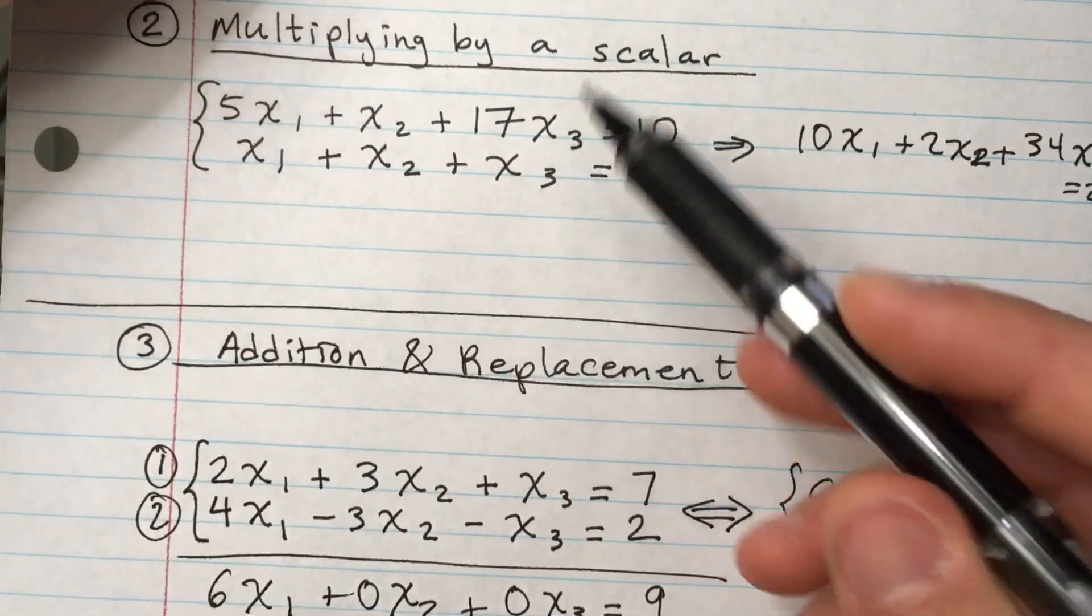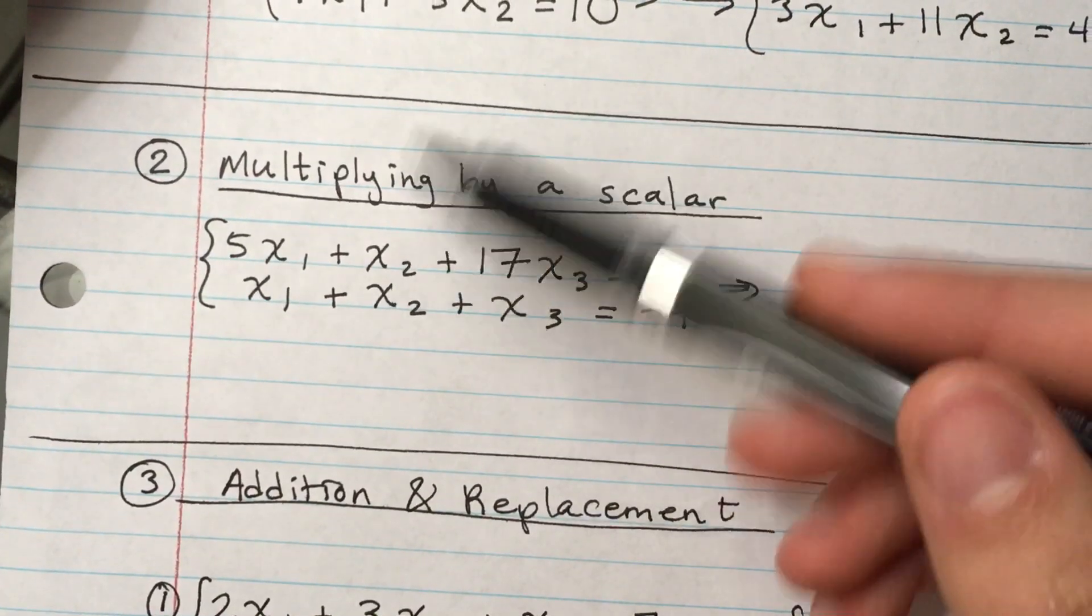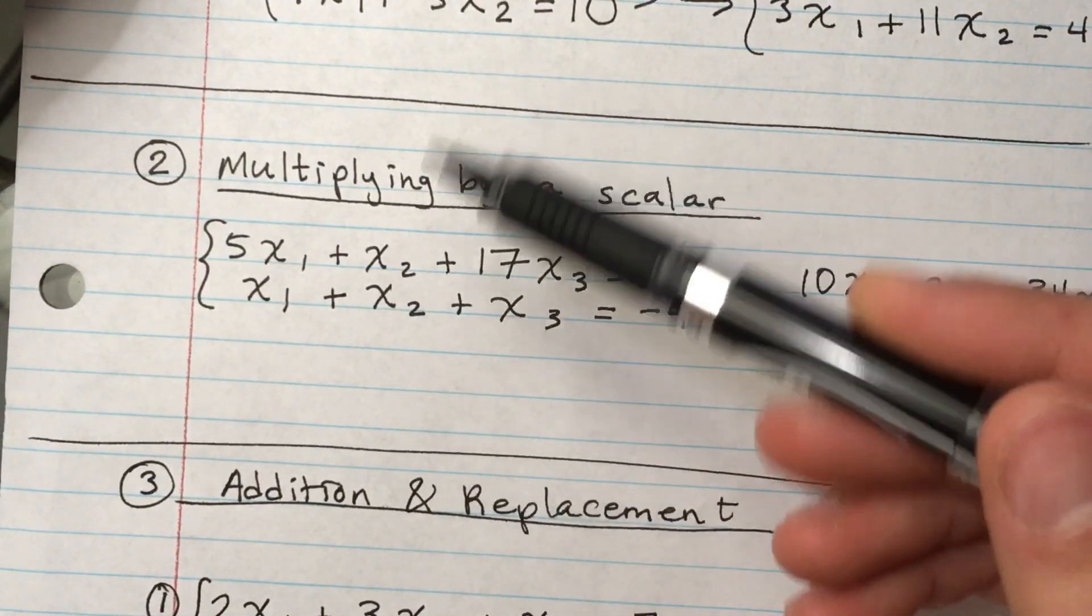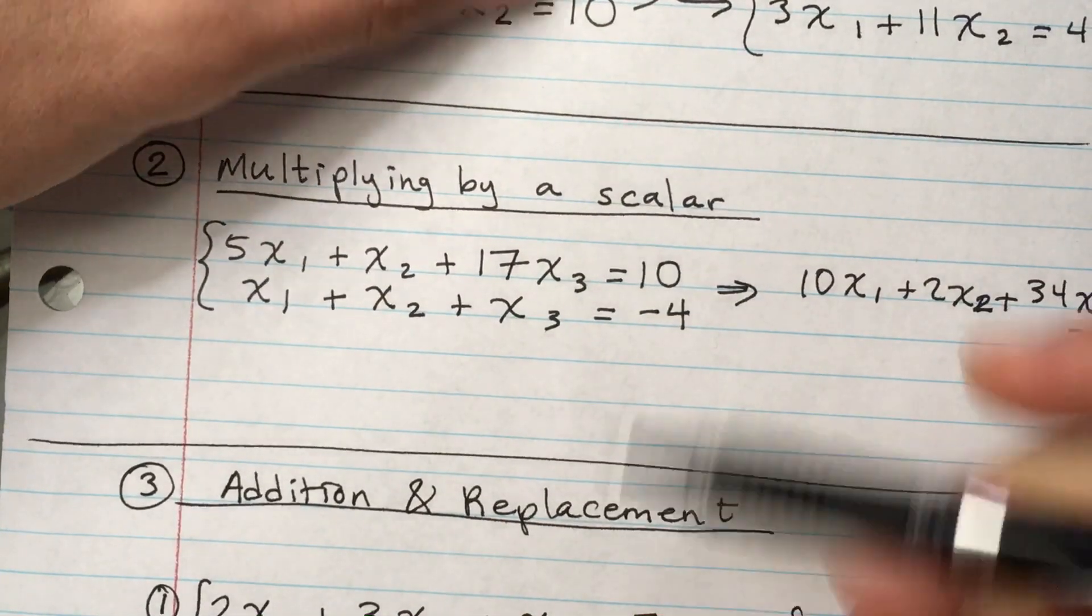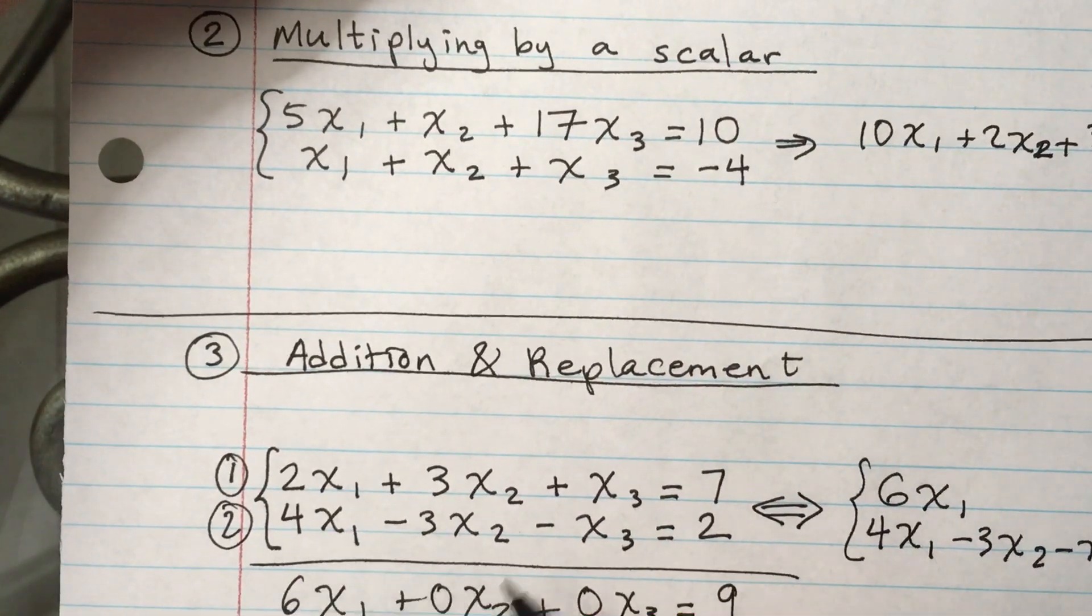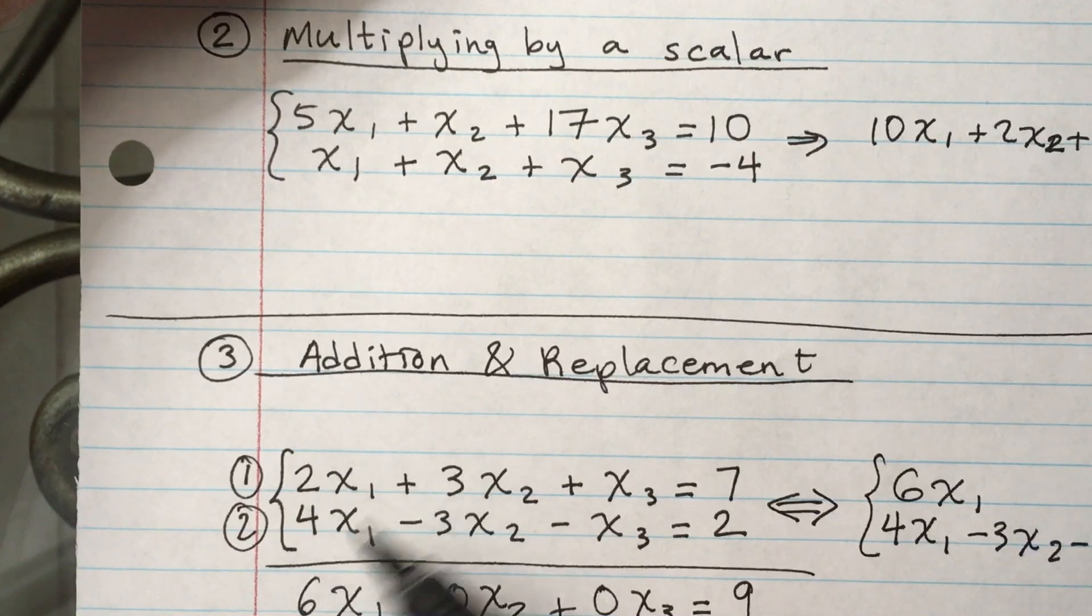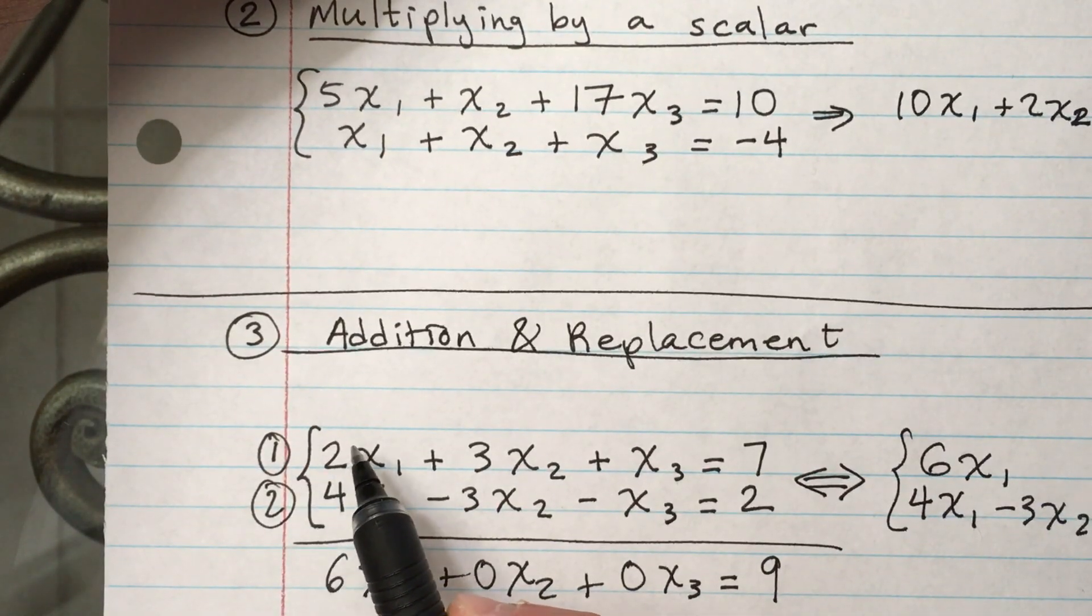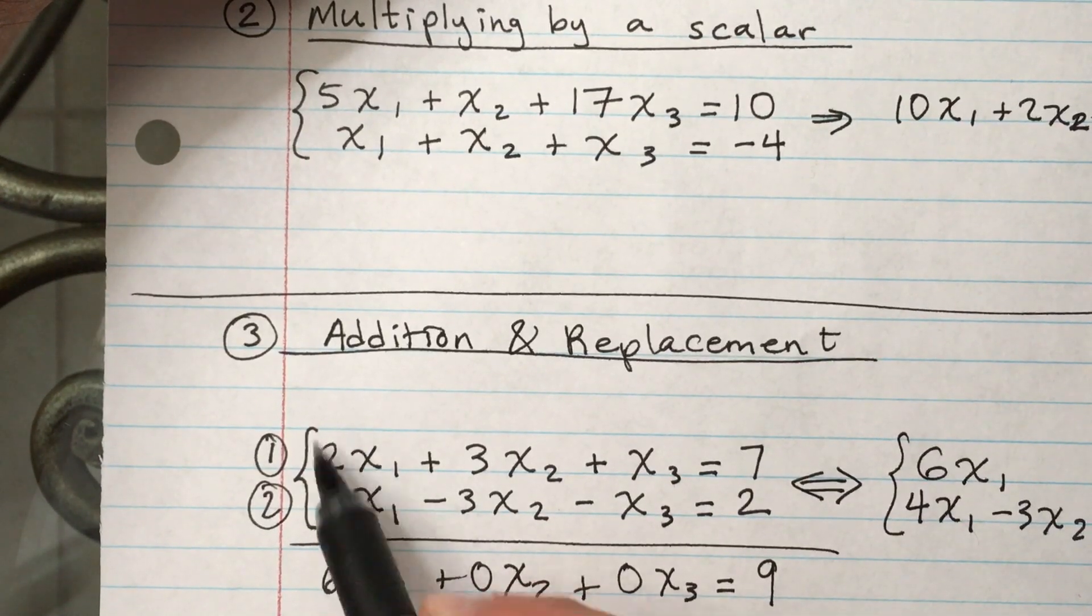Okay, now of course you could mix and match a couple of these. There's three rules, right? You could combine one or more of these rules into one single operation and it would still work. For example, let's say here in the addition replacement before adding these two, let's say my goal was to cancel out x₁ for some reason, I could multiply the top row by negative 2.